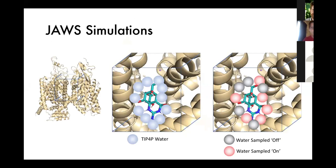Finally, we're also including water prediction calculations done with JAWS simulations in the GEMspot pipeline. This is a Monte Carlo simulation in which you hydrate the binding site around the ligand. Over the course of the simulation, if it's energetically favorable to have a water there, the water will be sampled on; if not, it will be sampled off. By looking at the percentage of time a water is sampled in a given position, it predicts whether there should be a water at that position.